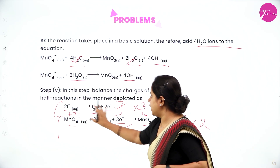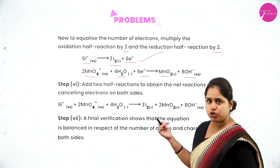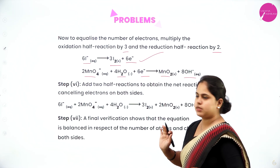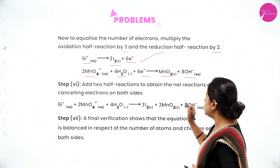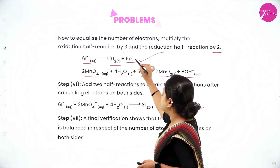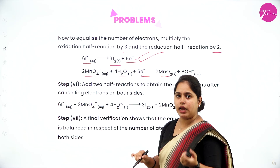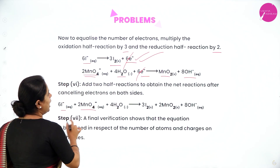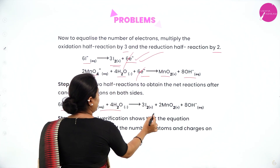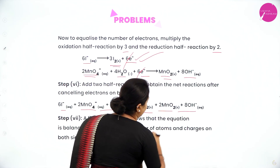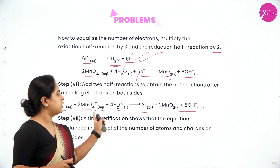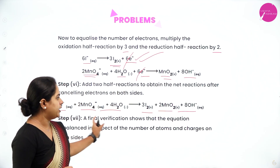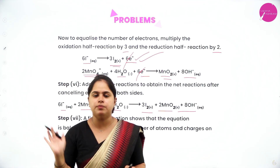Now add the two half reactions, cancelling the 6 electrons on both sides. Adding the reactions gives: 6I⁻ + 2MnO₄⁻ + 4H₂O → 3I₂ + 2MnO₂ + 8OH⁻. This is the final balanced redox equation in basic medium. If you count the number of oxygen, hydrogen, and all other atoms on both sides, they are all balanced. I hope this is clear.